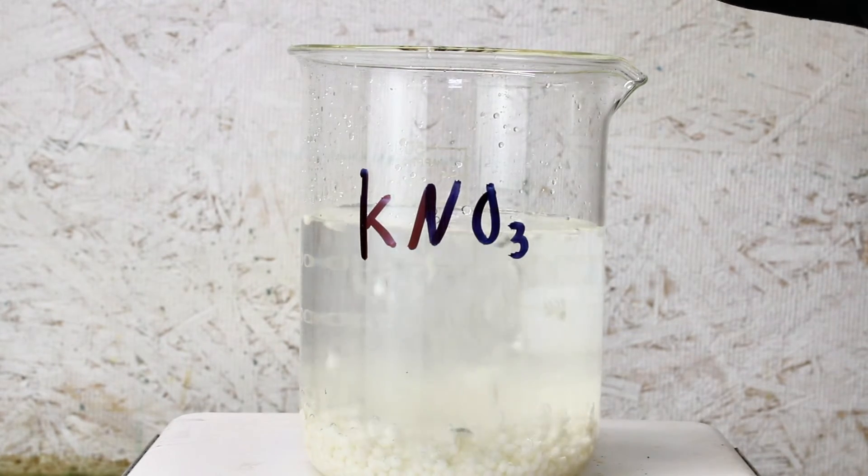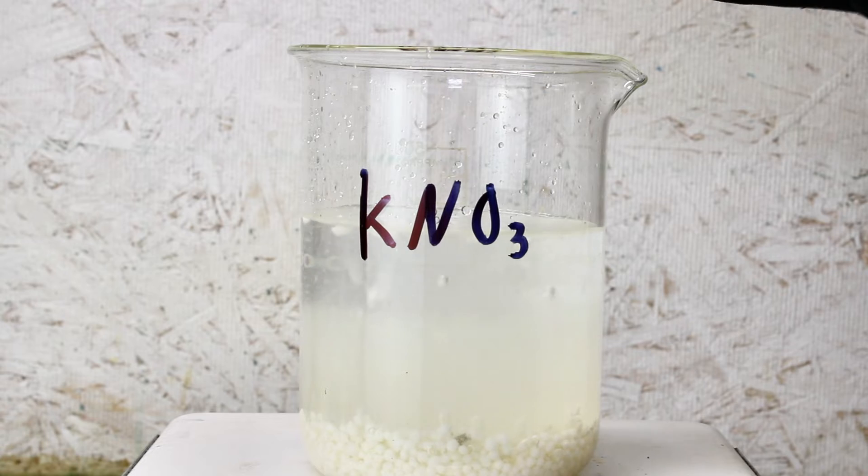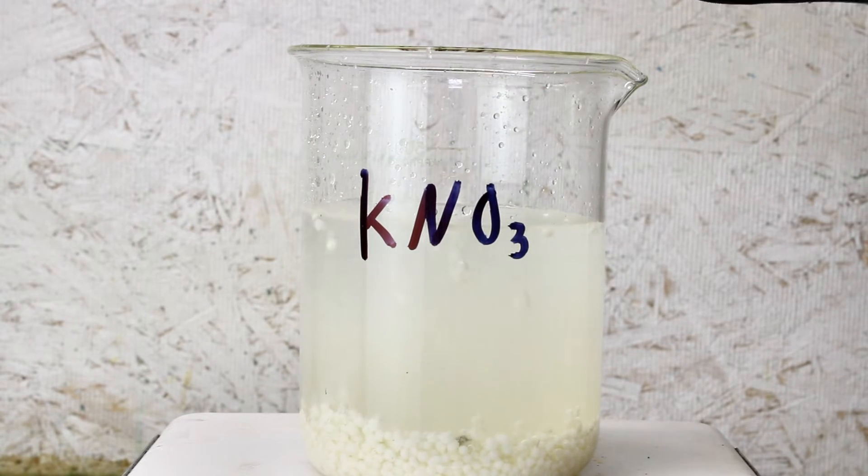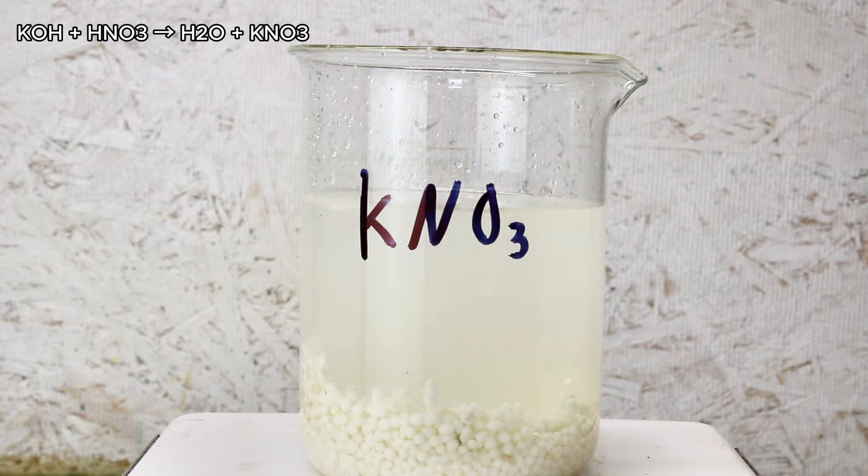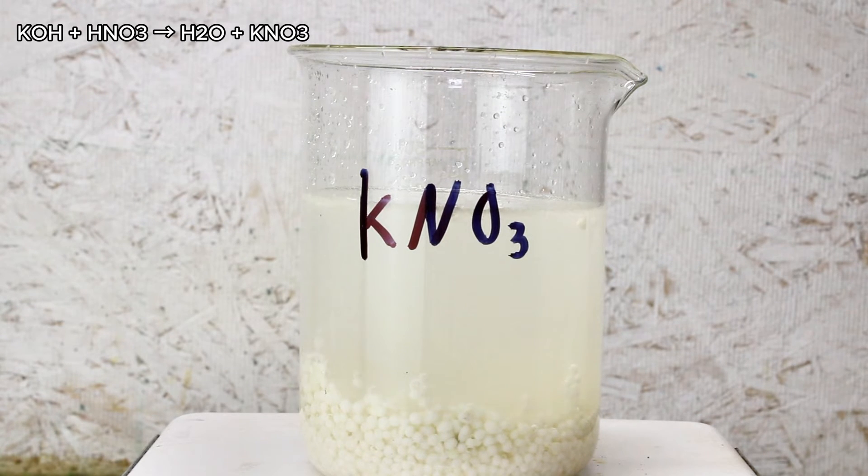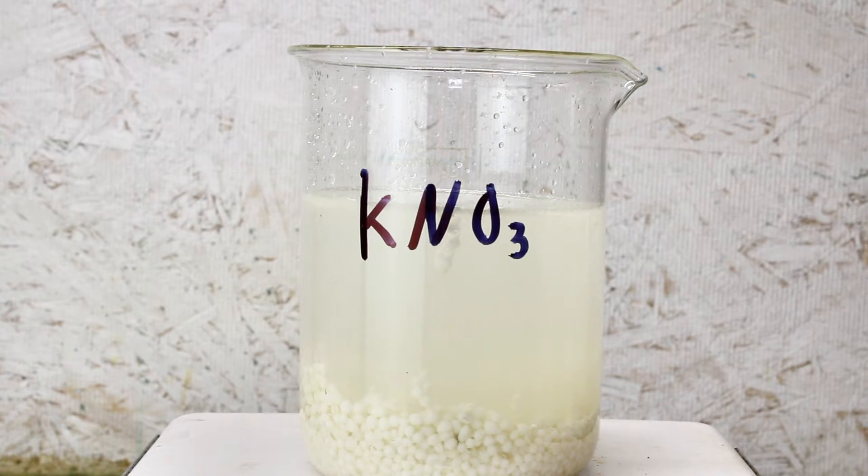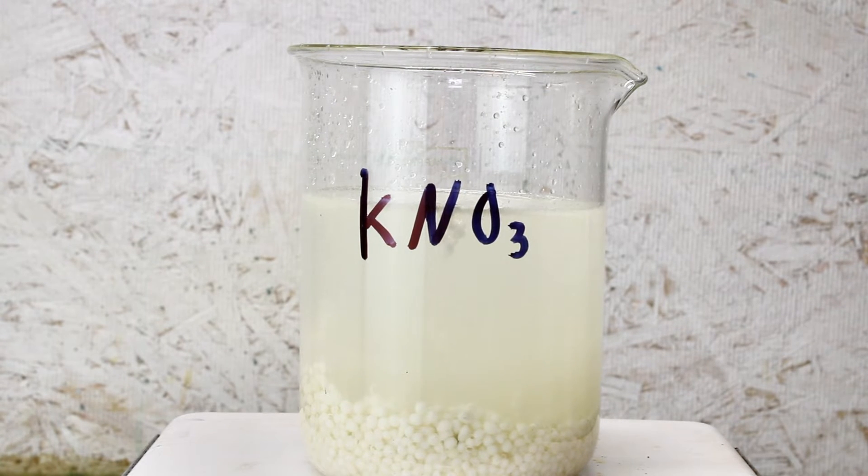Anyway, there's several ways to make this chemical, and as always, the cleanest and most direct would be by neutralizing potassium hydroxide with nitric acid. However, nitric acid is a little too valuable to waste on this, so I typically like to make potassium nitrate by a double displacement reaction.